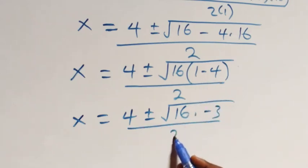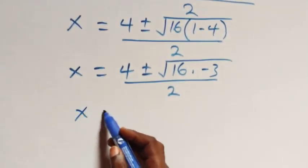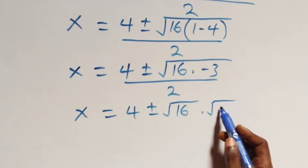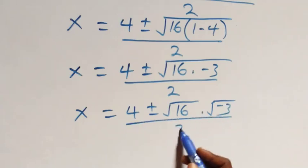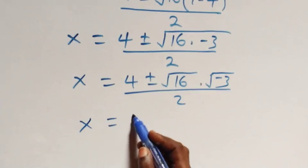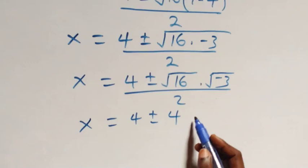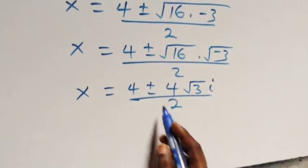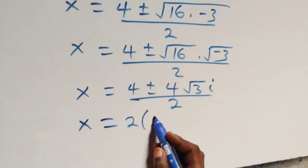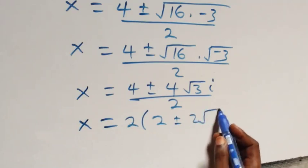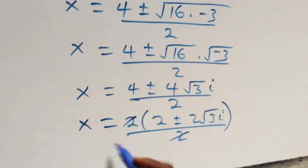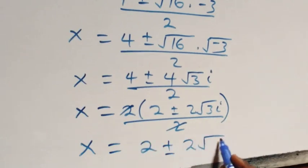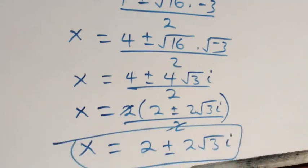That is, x equals 4 plus or minus square root of 16 times negative 3, over 2. Since root 16 is 4, we factor it out and get 2 into brackets (2 plus or minus 2 root 3i), over 2. The 2s cancel, giving x equals 2 plus or minus 2 root 3i. So we have two complex solutions here.